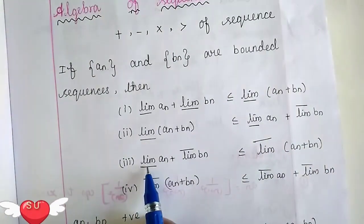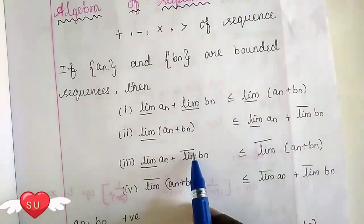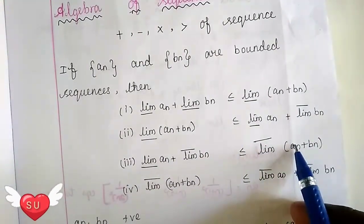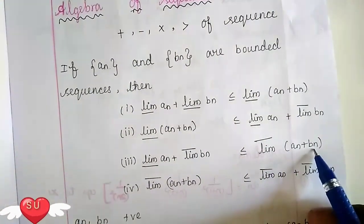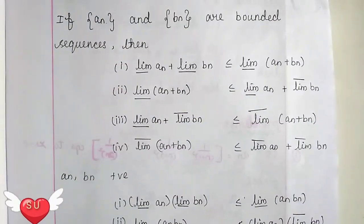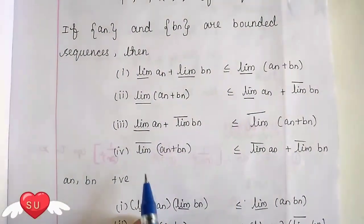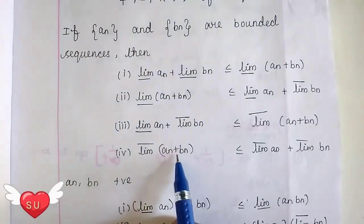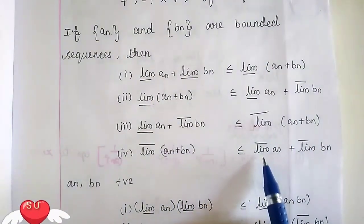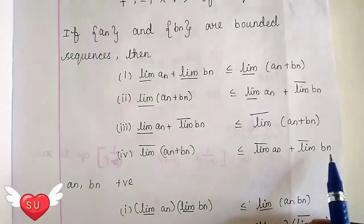So limit of an lower bound plus upper bound limit of bn is less than or equal to the upper bound limit of an plus bn. The upper bound limit of an plus bn is less than or equal to the upper bound limit of an plus the upper bound limit of bn.